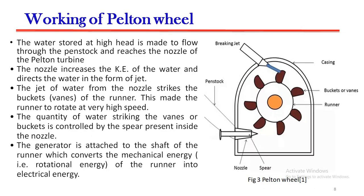Working of Pelton wheel: The water stored at high head is made to flow through the penstock and reaches the nozzle of the Pelton turbine. The nozzle increases the kinetic energy of the water and directs the water in the form of a jet. The jet of water from the nozzle strikes the bucket, i.e. vanes of the runner, making the runner rotate at very high speed. The quantity of water striking the vanes of the bucket is controlled by the spear present inside the nozzle. The generator is attached to the shaft of the runner which converts the mechanical energy, i.e. rotational energy of the runner, into electrical energy.